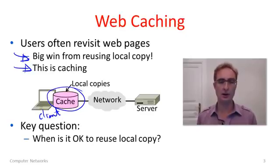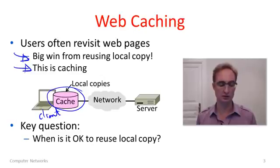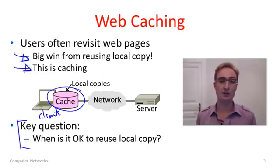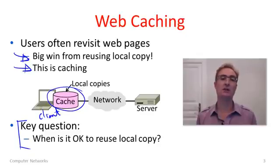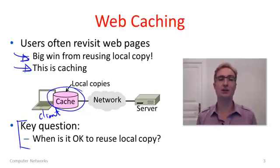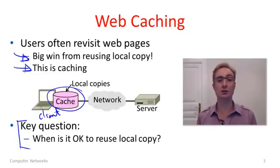The key question when the browser has been instructed to fetch a URL is: when is it okay to reuse a local copy that you happen to have in the cache? If you have an entry for the URL you're trying to fetch, you still need to know when you can actually make use of that copy. That copy might have changed on the server, in which case you don't want to present old information. But it might also be the same, in which case you'd like to use it so you don't transfer it across the network.